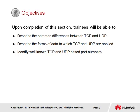Upon completion of this section, it is generally expected that trainees will be able to describe the common differences between TCP and UDP, describe the forms of data to which TCP and UDP are applied, and identify well-known TCP and UDP-based port numbers.